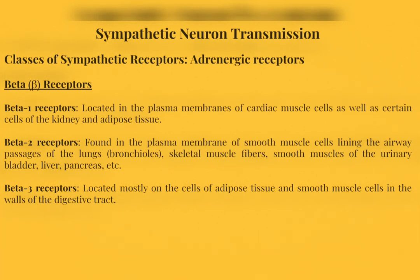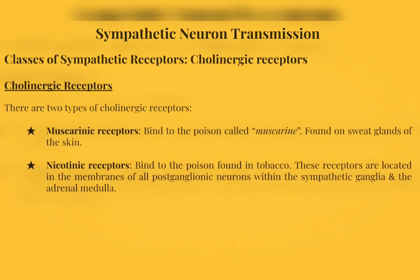Beta-3 receptors are located mostly on adipose tissue cells and smooth muscle cells in the walls of the digestive tract. Cholinergic receptors have two main types: muscarinic and nicotinic. Muscarinic receptors bind to the poison called muscarine, while nicotinic receptors bind to the poison found in tobacco. These receptors are found in the membranes of all postganglionic neurons within the sympathetic ganglia and adrenal medulla.